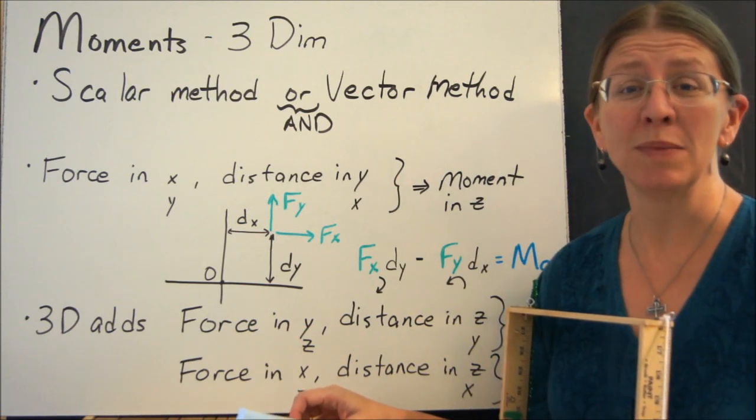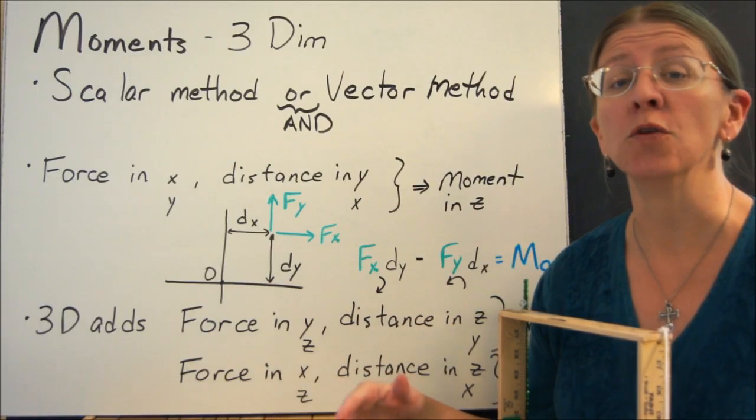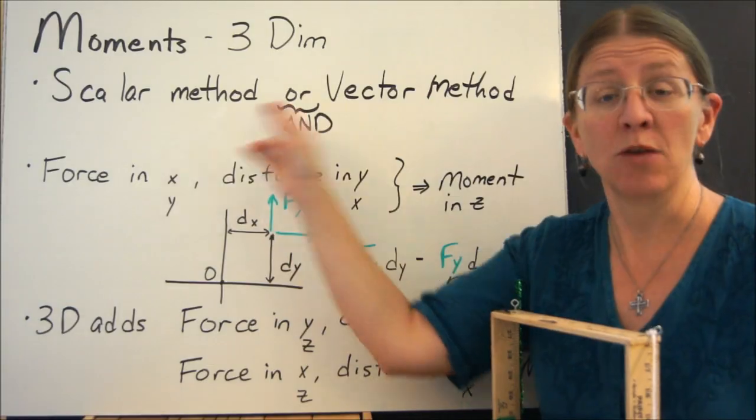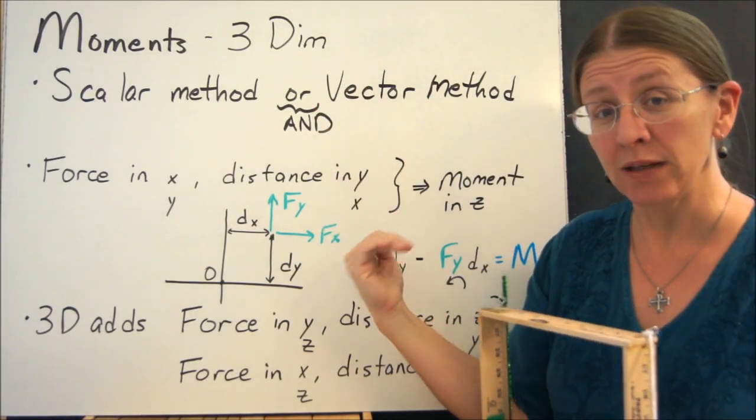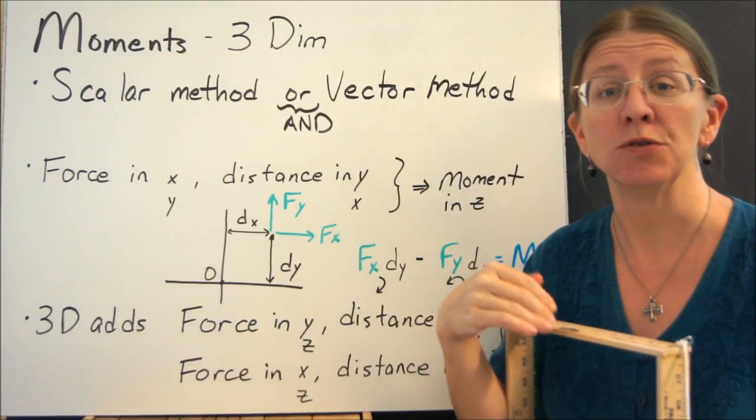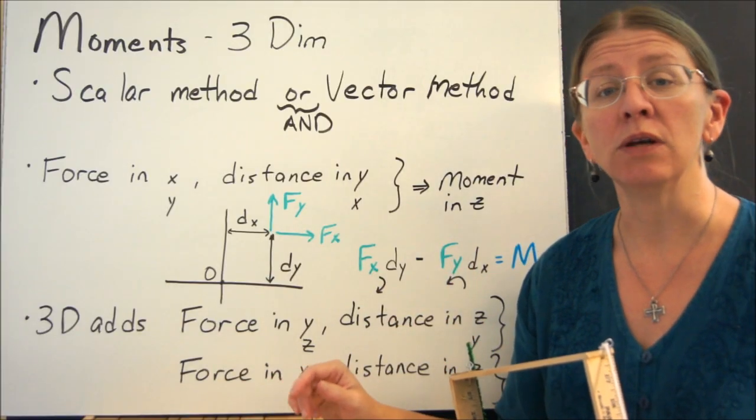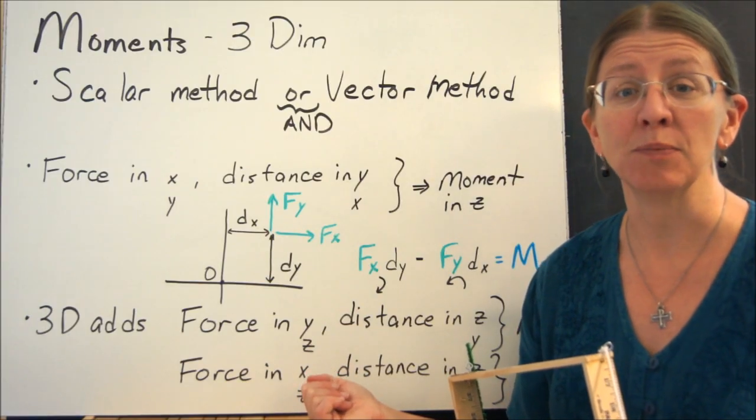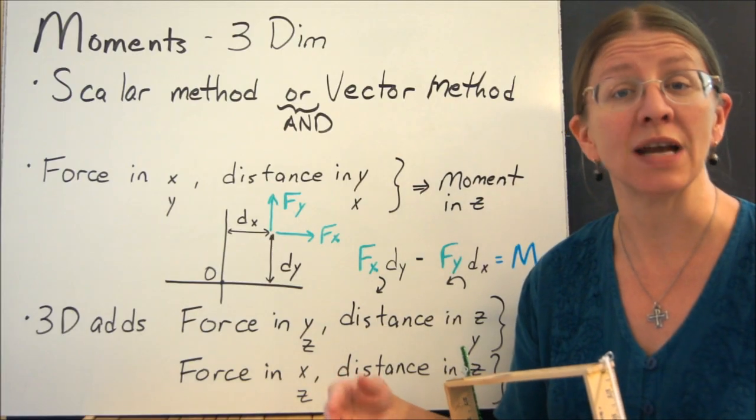Moments in three dimensions are a lot like moments in two dimensions. You still have a force times a distance giving you a rotation about a certain axis. We're still going to have the scalar method and the vector method, but while you can use either one, I'm going to suggest that you use both because the scalar method will give you a feel for what's actually rotating. The vector method is simply an easier way of calculating things when you have fully populated R's and F's.